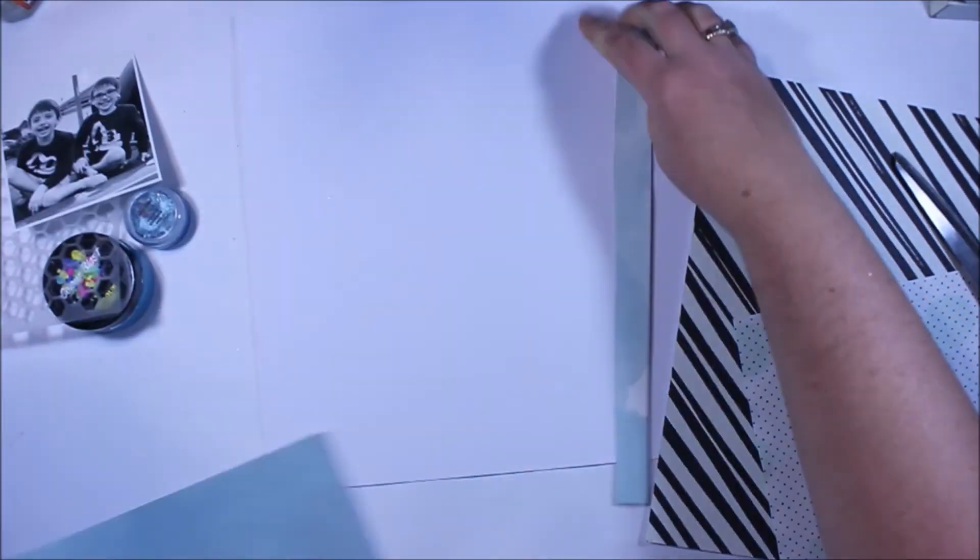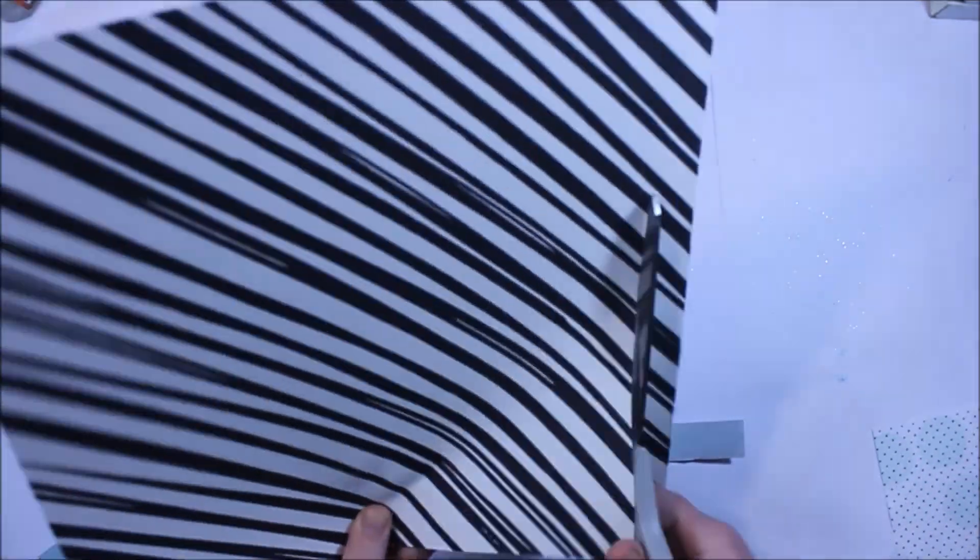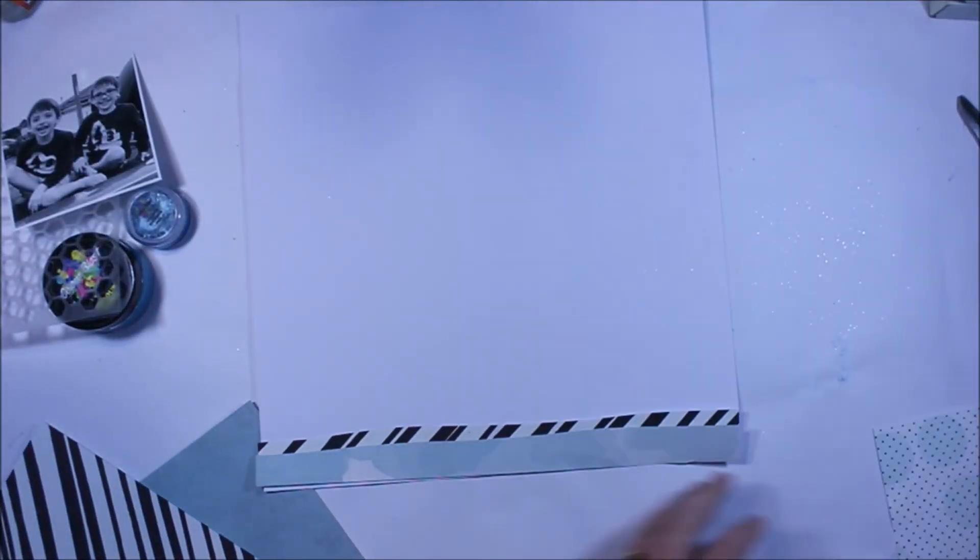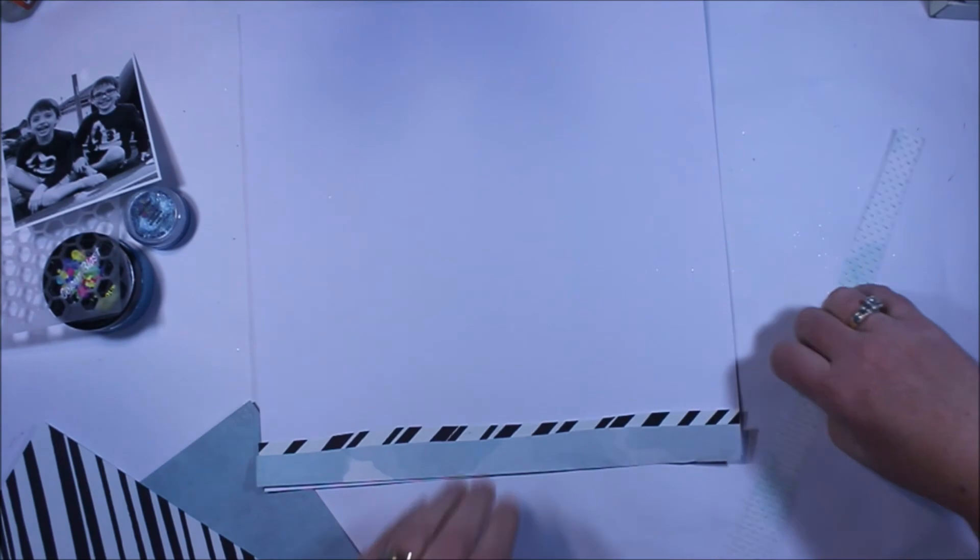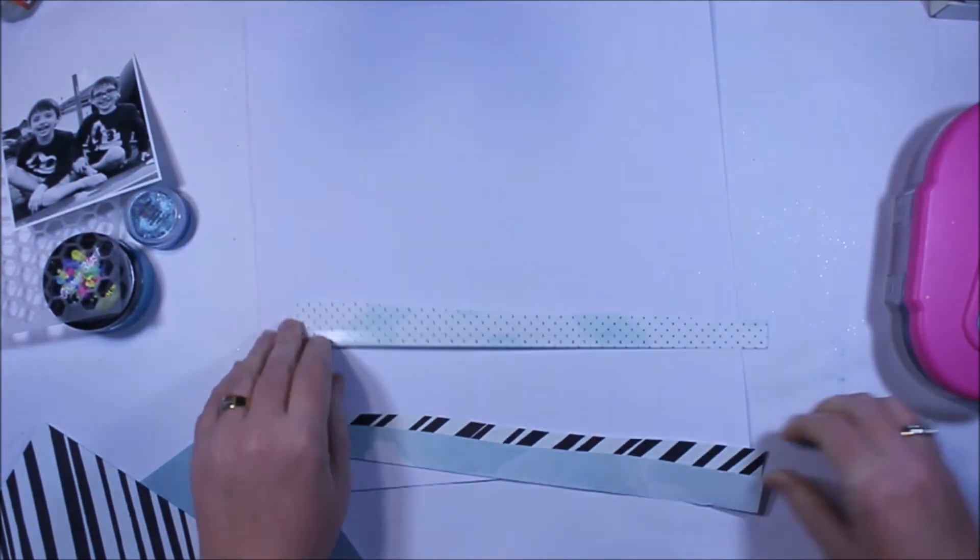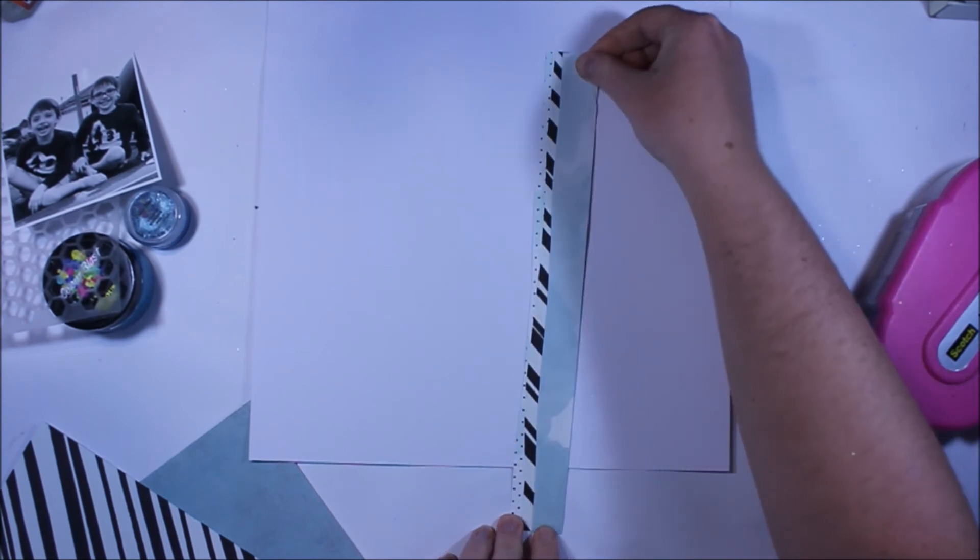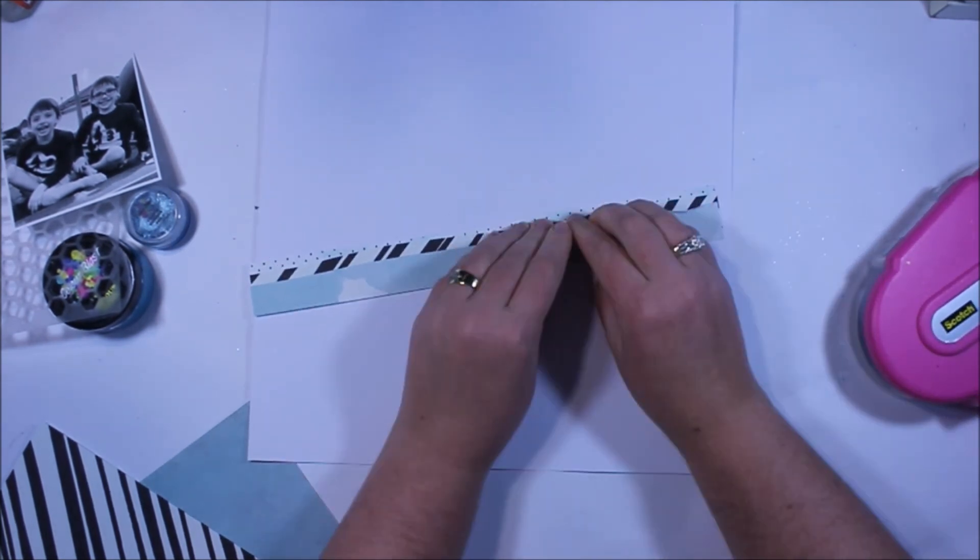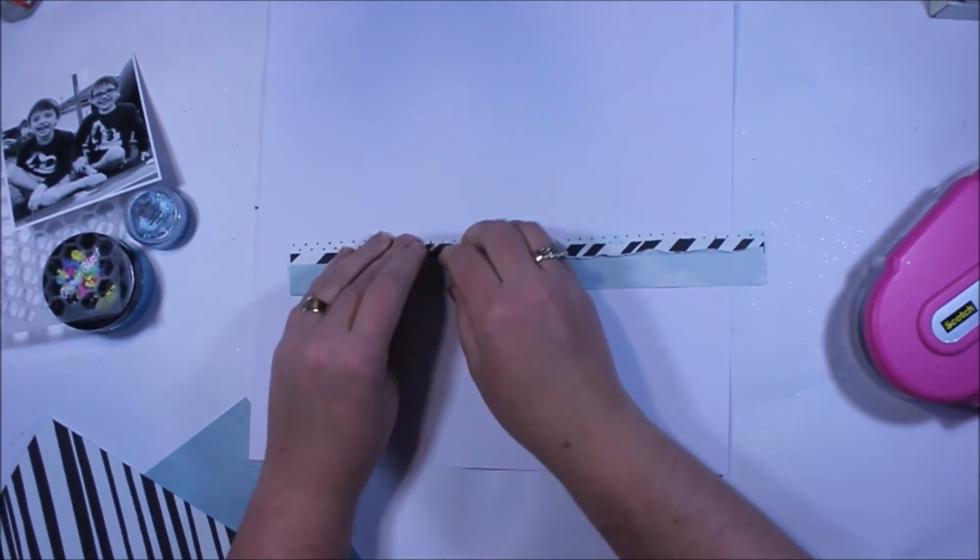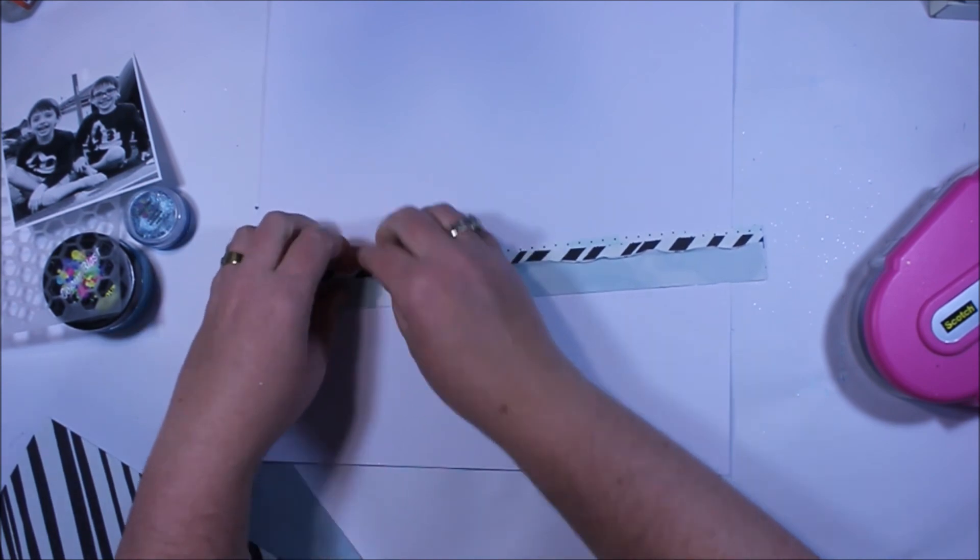I've also taken a 12 by 12 light cardstock as well, and that's going to form the basis for the background. I've also chosen a stencil or template, whatever you want to refer to them as, and some Color Blast products as well. I'm going to show you a couple of things that I'm going to do with those.